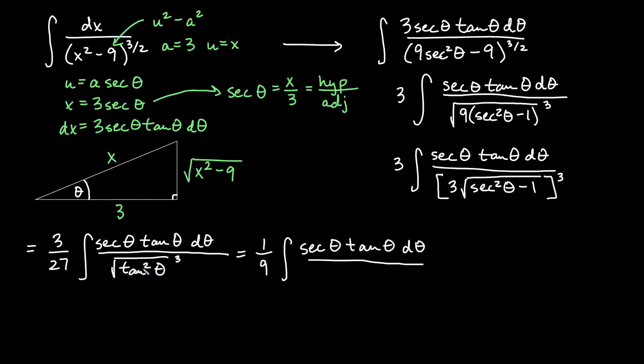If I square root, the square goes away. I need to add a cube there though. So that's tangent cubed theta. I can reduce the tangent theta on the top. Making that a square. And so we'll get 1 over 9. Integral of secant theta d theta over tan squared theta.